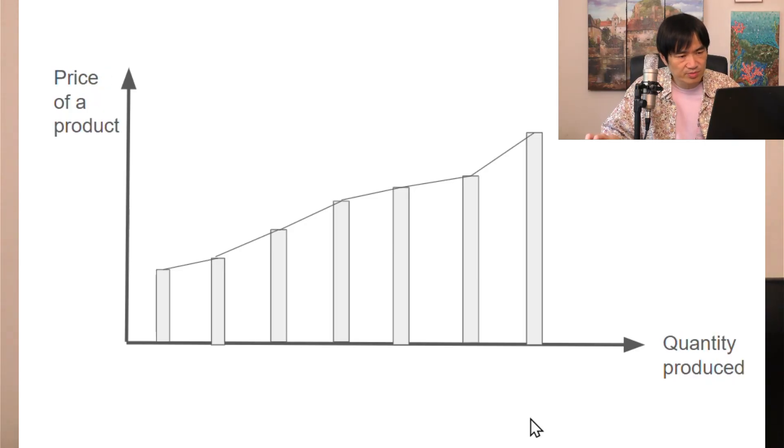Now let's change up the variables. Let this be the price of the product, and let this be the quantity of the product that will be produced. So instead of lining up the cars, we line up all the units of this product based on how much it costs to produce them from the lowest to the highest.